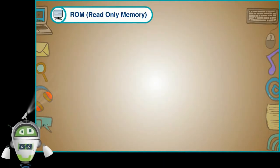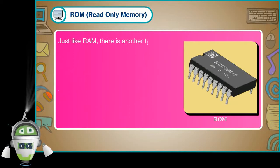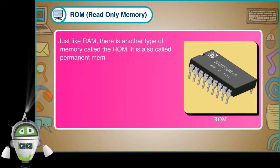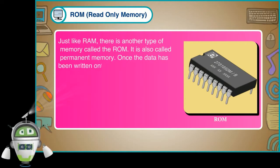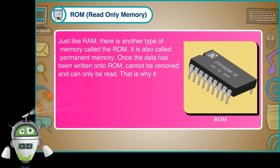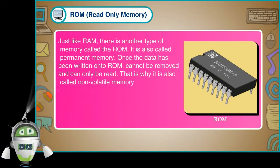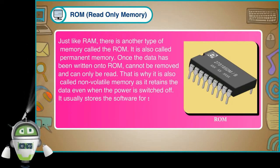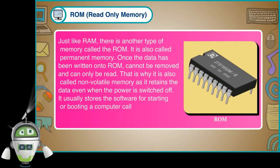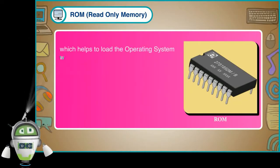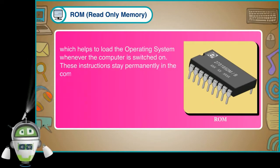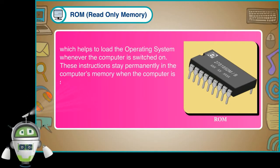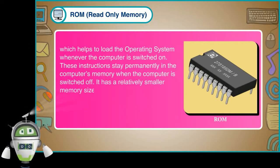ROM, or Read-Only Memory, is another type of memory. It is also called permanent memory. Once the data has been written onto ROM, it cannot be removed and can only be read. That is why it is also called non-volatile memory, as it retains the data even when the power is switched off. It usually stores the software for starting or booting a computer called BIOS — Basic Input/Output System — which helps to load the operating system whenever the computer is switched on. These instructions stay permanently in the computer's memory and it has a relatively smaller memory size than RAM.